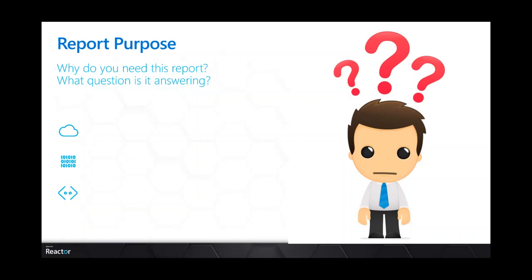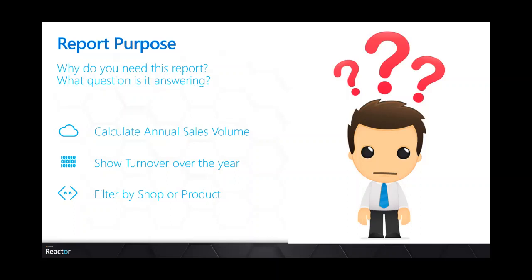Why are we doing this report at all? This is a really good question to answer before you start. What question is it trying to answer? For our example today — a sales report — I'm going for: what's my annual sales volume? How many items did I sell? And what's my turnover? Out of those items, how much money came into the bank? And can I filter that by the shop that sold it, or the product? This is a made-up company that obviously wasn't touched by Covid because the business just carried on. That's the question you need to answer, and when we create the report we'll come back and ask: did we answer those three questions?